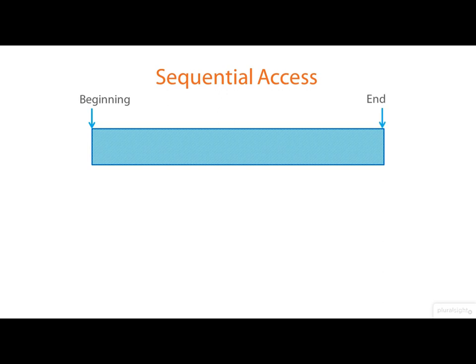Linux maintains a marker, which I've called the File Position Pointer, which tracks where we are in the file and where the next read or write will occur. Unless I open the file for appending, this marker will start off at the beginning of the file.